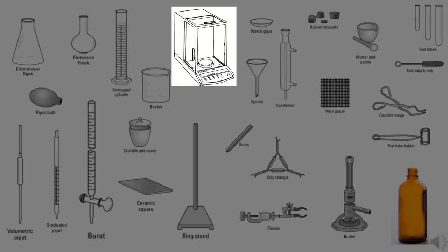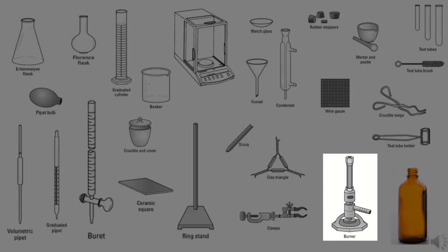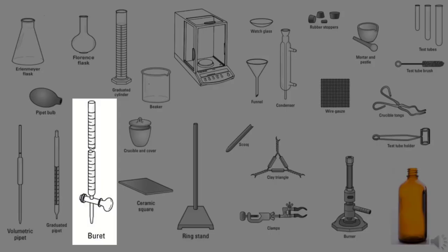Balance, used for obtaining the masses of solid and liquid samples. Beaker, a flat bottom cylindrical piece of glassware used for mixing and heating compounds. Bunsen burner, attached to a gas line and led to provide heat for your experiment. Buret, an extremely accurate device with a stopcock at the bottom used to measure volumes of reagents.